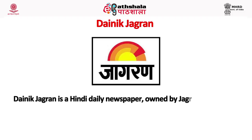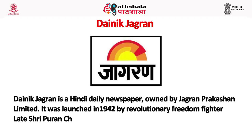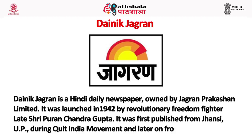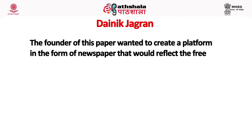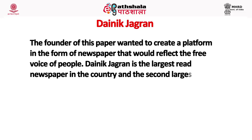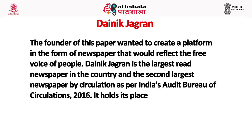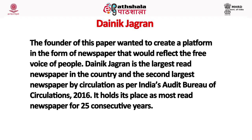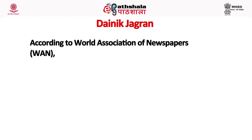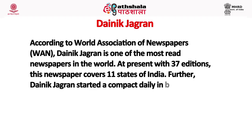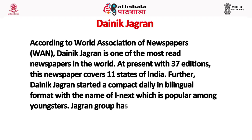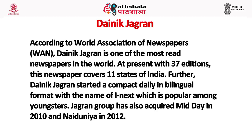Dainik Jagran is a Hindi daily newspaper owned by Jagran Prakashan. It was launched in 1942 by revolutionary freedom fighter Puran Chandra Gupta, first published from Jhansi, Uttar Pradesh during the Quit India movement, and later from Kanpur. Dainik Jagran is the largest-reach newspaper in the country and the second largest by circulation as per India's Audit Bureau of Circulation 2016. It holds its place as the most-read newspaper for 25 consecutive years. With 37 editions it covers 11 states. Dainik Jagran also started a compact bilingual paper called i-Next, and acquired Mid-Day in 2010 and Nai Dunia in 2012.